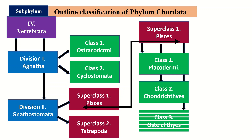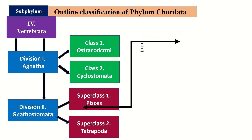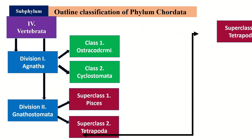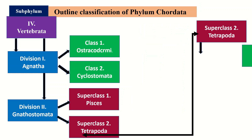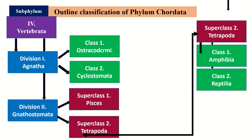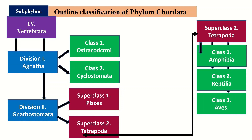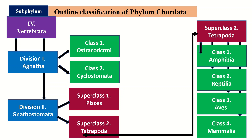Superclass Tetrapoda has four classes: class Amphibia, class Reptilia, class Aves, and class Mammalia. This is all about the outline classification of phylum chordata, and all these steps will be discussed in detail in our next video.